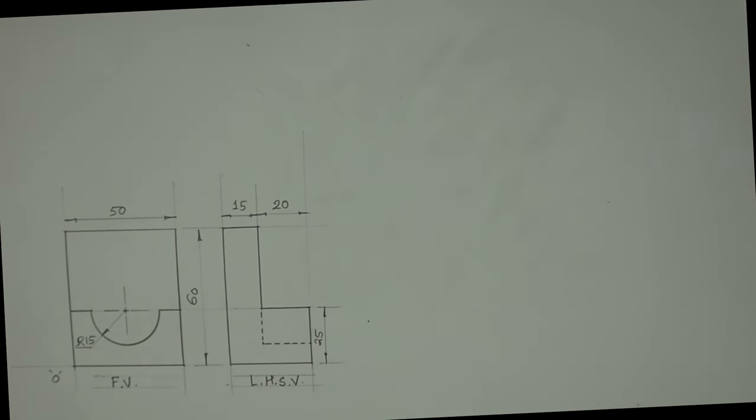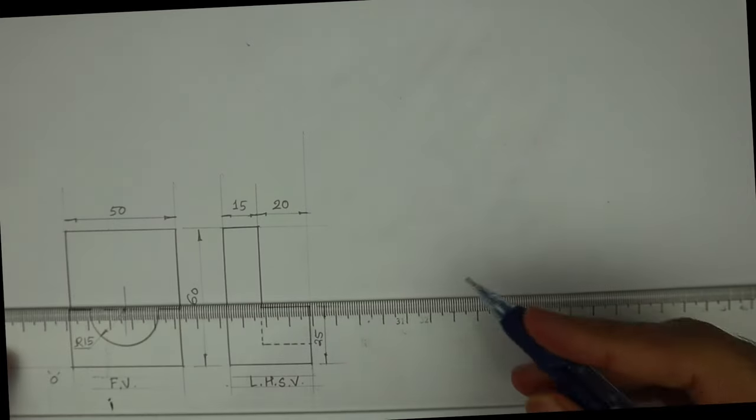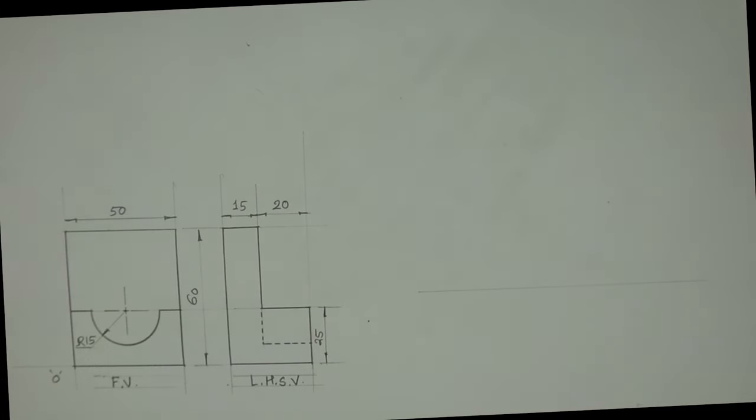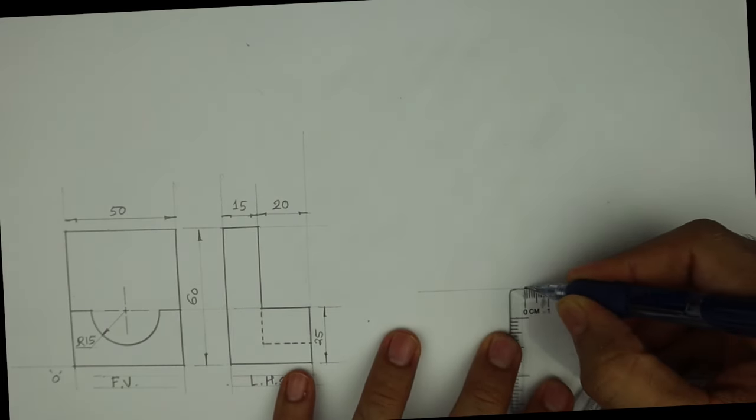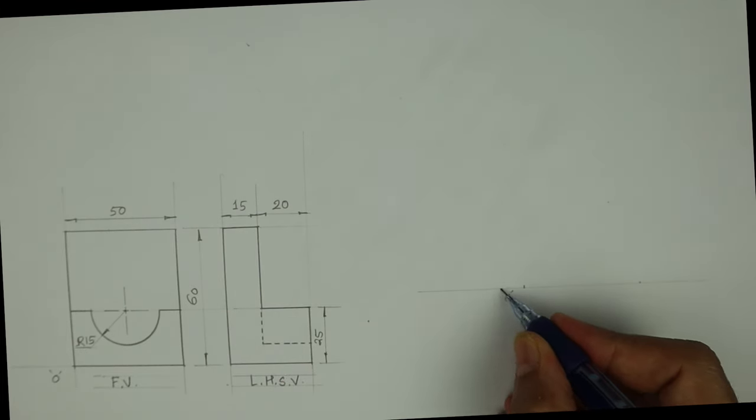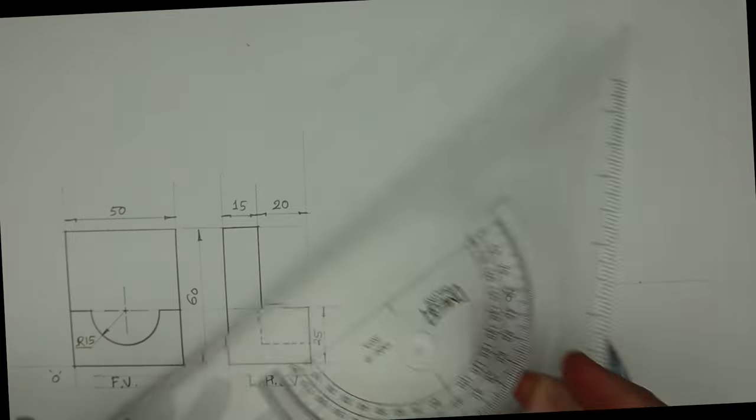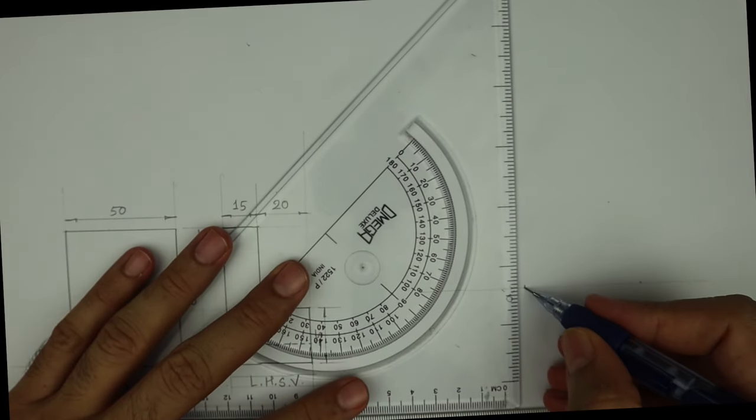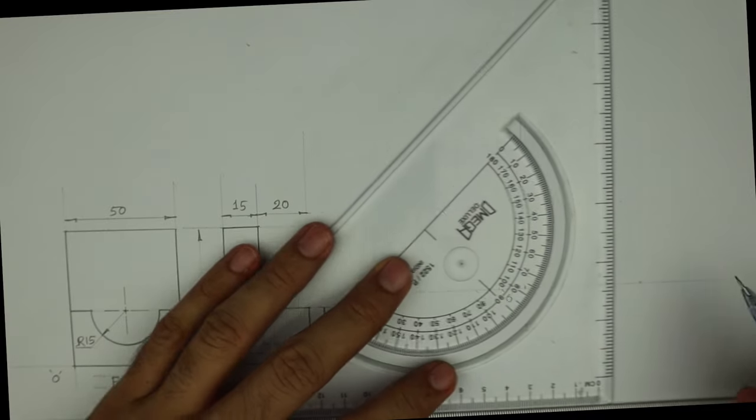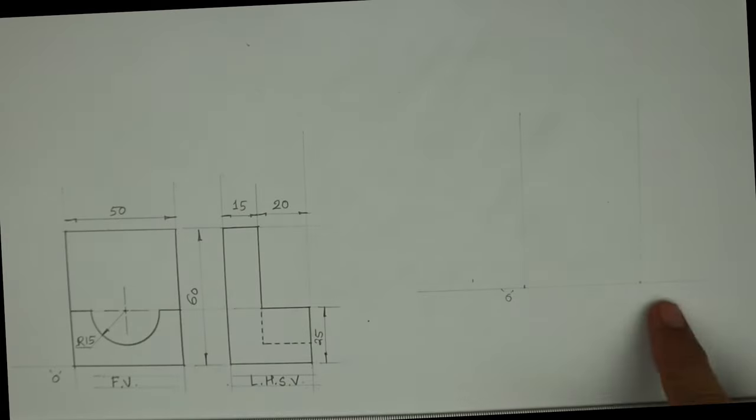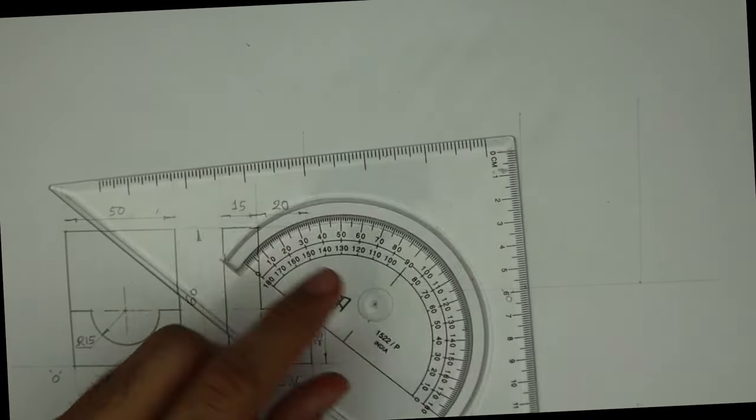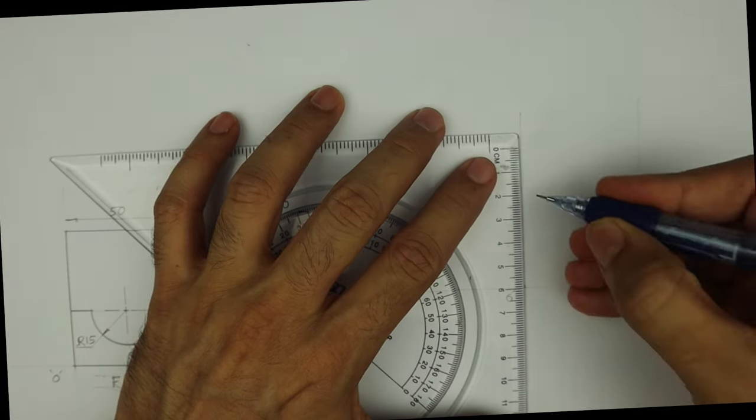Welcome to technical drawing. Today we're going to solve this sum in oblique view. They have given you front view and left hand side view. First we need to draw a box, so what we will do is draw the front view as it is. That means length and height. Origin is here on the left side. Length is 50, height is 60. So you need to draw the layout of front view.